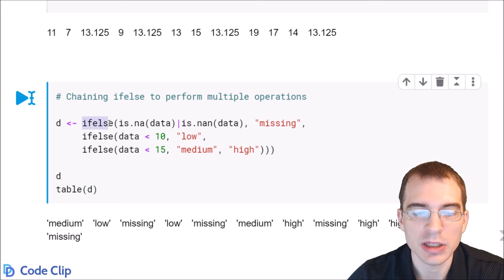So we're going to say ifelse, the same construction to identify the missing ones. If that's true, we'll say missing. If it's not true, instead of just returning the original value, we'll do another ifelse. So if it's not true, we'll say if the data is less than 10, we're going to call it low.